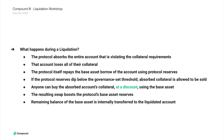During a liquidation, the protocol absorbs the entire account violating collateral requirements. Any supplied collateral assets are moved to the protocol's own account — that account loses all their collateral. The protocol repays the base asset borrow using its reserves. If reserves dip below the governance-set threshold, the absorbed collateral can be sold. Anyone can buy the absorbed collateral at a discount using the base asset, which boosts the protocol's base asset reserves for future liquidations.